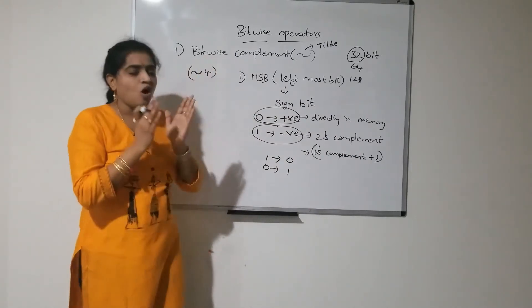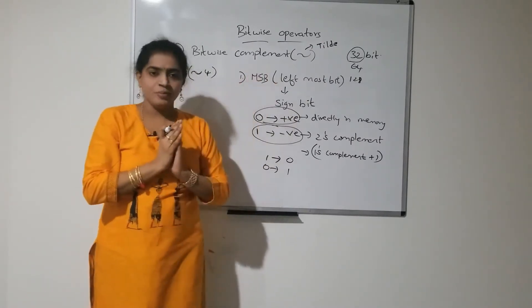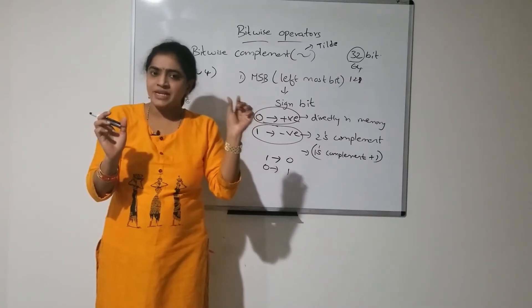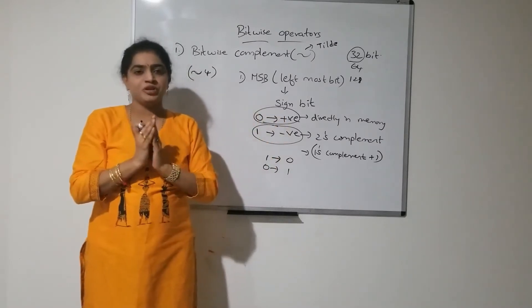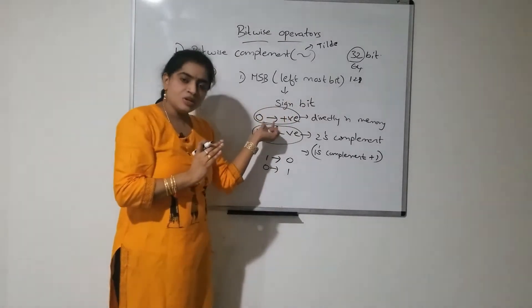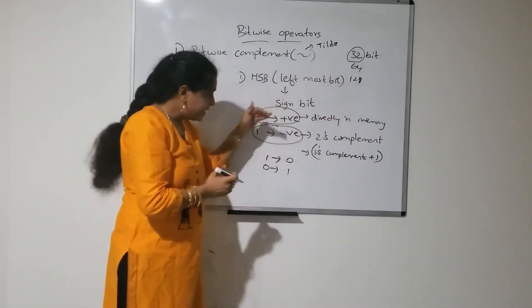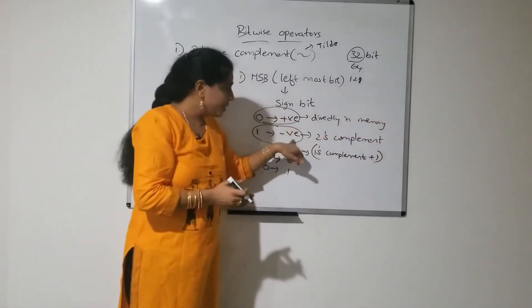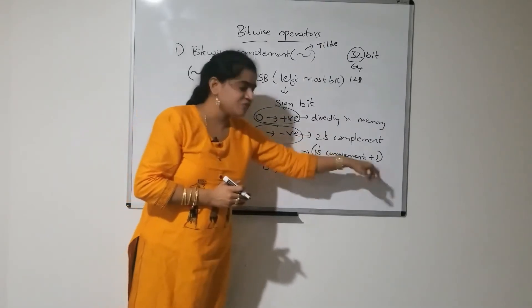Always, integers are represented in memory as a 32-bit format. Out of those 32 bits, the leftmost significant bit always represents the sign. If it is 0, it represents a positive number, and positive numbers are stored directly in memory. If it is 1, it represents a negative number, and we represent 4 in 32-bit format for the complement operation.